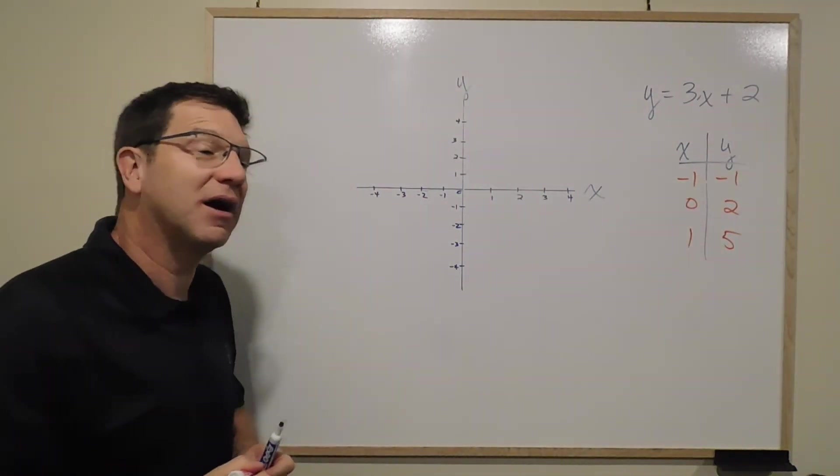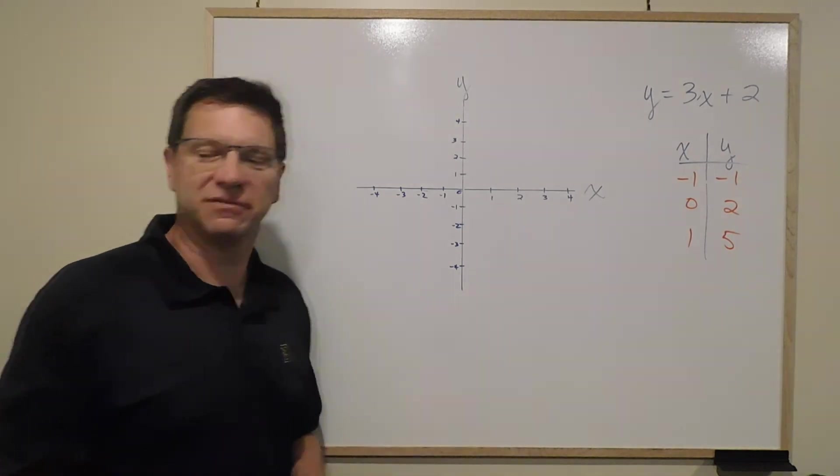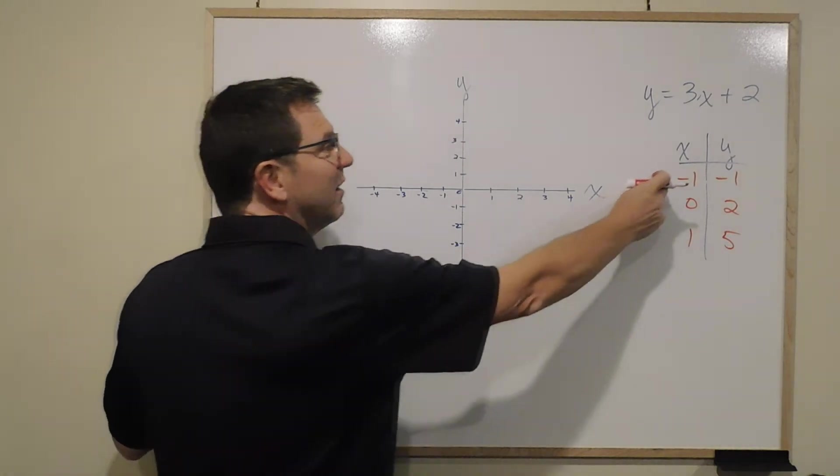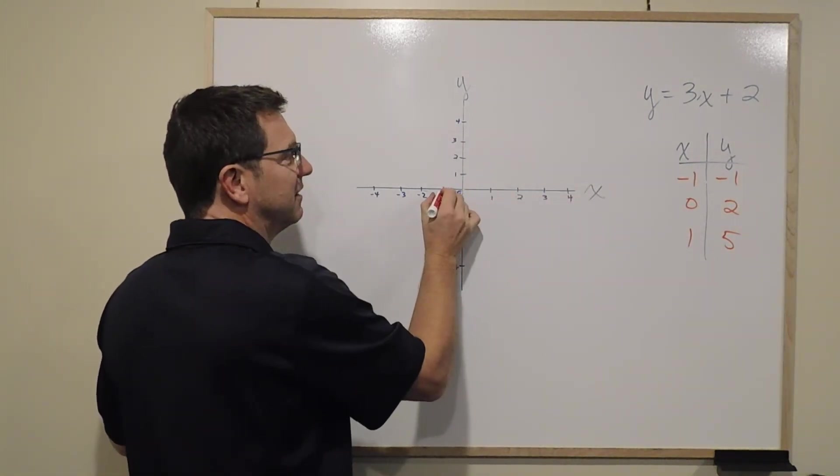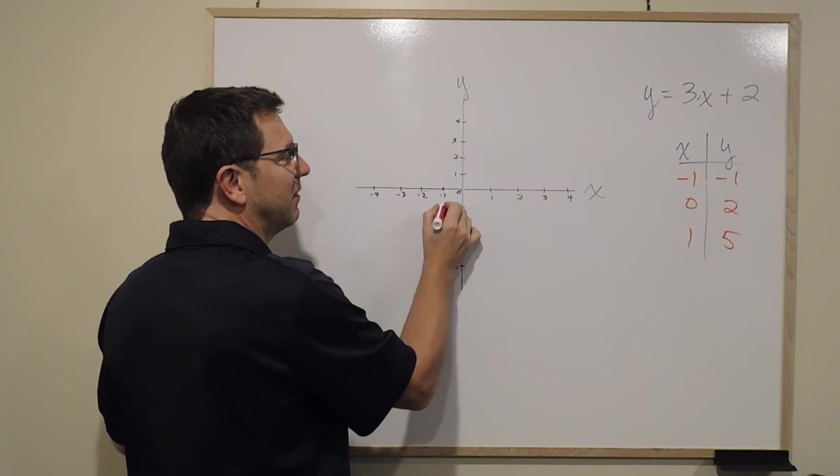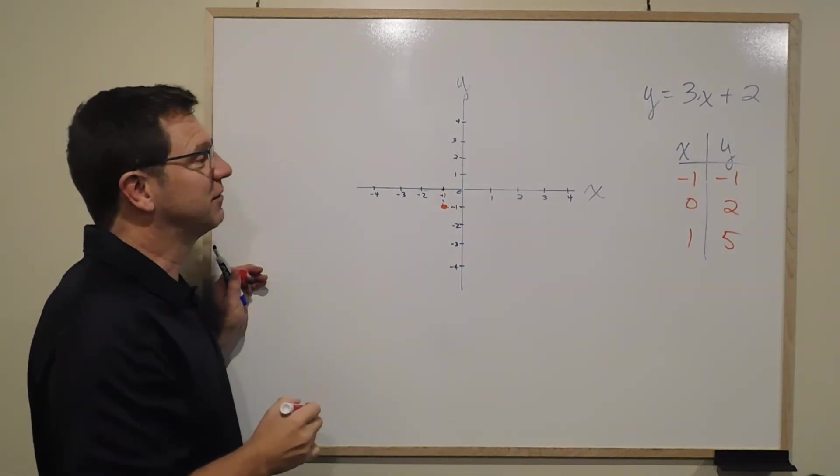These become points we can graph. Let's use red. So negative 1 on the x is here, and you just go like this and like this. Wherever they line up is a point.